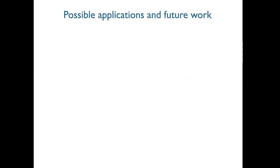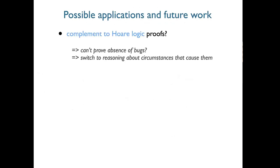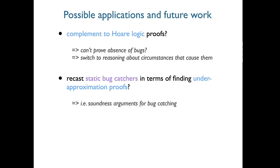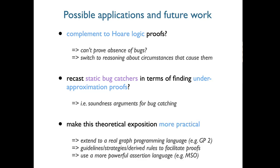Some possible applications and reasons to be interested in this: it could be an interesting complement to Hoare logic proofs. If you can't prove the absence of bugs — can't find that loop invariant — switch to the other side of the coin and reason about the circumstances that cause bugs, because maybe your program is buggy. These two sides could complement each other in a satisfying way. Another suggestion from O'Hearn's paper is to recast static bug catchers — tools based on symbolic execution — in terms of finding under-approximation proofs, giving a soundness argument for bug catching. This could be interesting in the graph or model transformation context, but it needs to be made more practical — our language and assertion language are quite rudimentary, and we may need more derived rules.